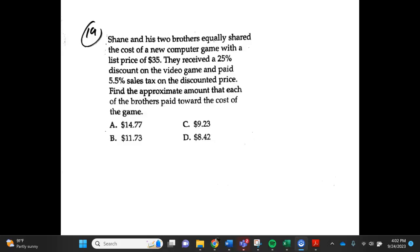Number 19. Shane and his two brothers equally shared the cost of a new computer game with a list price of $35. They received a $25 discount on the video game and paid 5.5% sales tax on the discounted price. Find the approximate amount that each of the brothers paid towards the cost of the game. A. $14.77, B. $11.73, C. $9.23, D. $8.42.